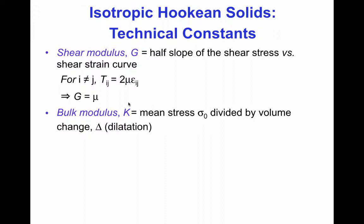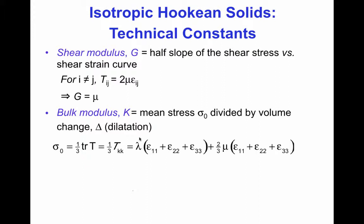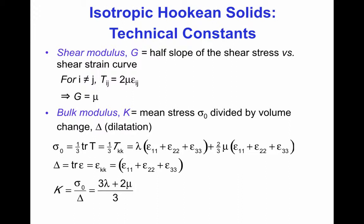Another technical constant is the bulk modulus, which is the mean stress sigma_0 divided by the volume change or dilatation delta. The mean stress sigma_0 is one-third of the trace of the stress tensor, or one-third of Tkk. Substituting into the isotropic Hookean equation, sigma_0 equals lambda plus two-thirds mu times the trace of the Cauchy strain. The trace of the Cauchy strain is the dilatation delta, or epsilon_kk. Therefore, the bulk modulus sigma_0 over delta equals (3 lambda plus 2 mu) divided by 3.